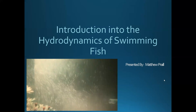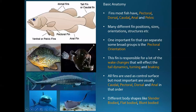Before we look at the hydrodynamics, let's talk about the fish themselves quickly. This is the basic anatomy of a fish. Most fish have pectoral fins, dorsal fin, a caudal fin, an anal fin and pelvic fins, and all these fins are used as valuable control surfaces. But the pectoral fin is one of the most important, and we can separate some broad groups by examining the pectoral fin position and orientation.